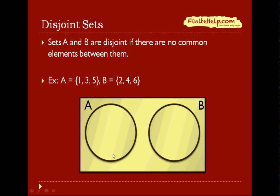And on the Venn diagram, you can represent it like such. Here's A and B, and there is no common overlapping area in the middle of them.